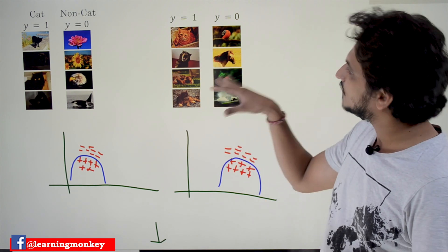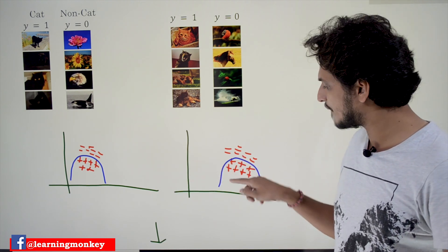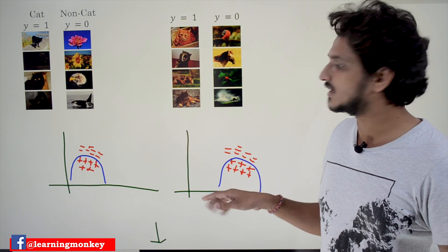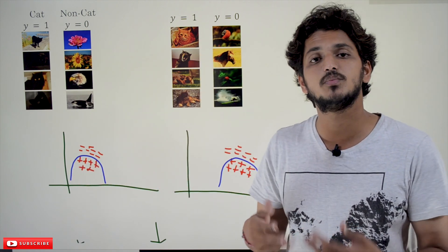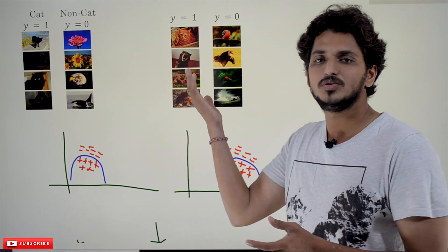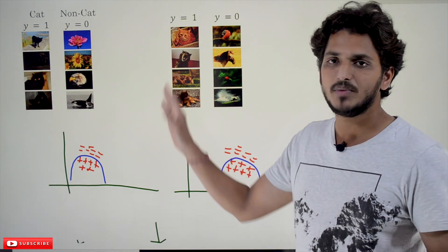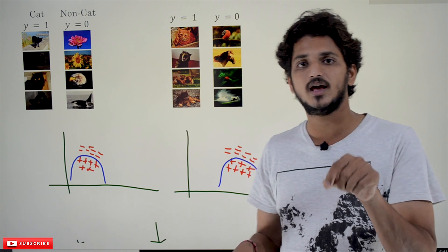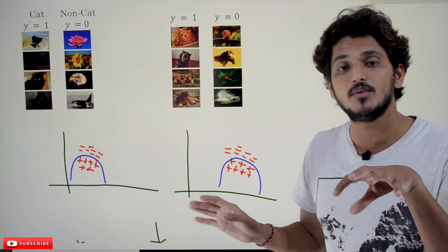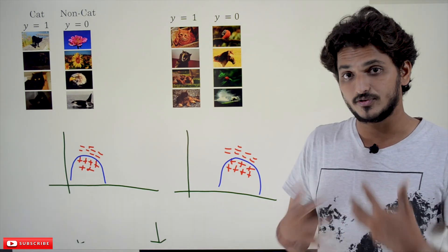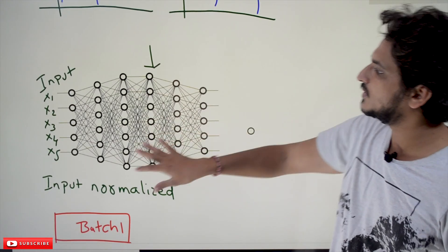Suppose in our testing data the cats are colored images. The input distribution in the testing data is different — it has shifted compared to the training data — because of the colored images considered in the cat examples. If the input distribution changes, even though the function looks similar, the training function we got during training is unable to identify the colored cat images. It is not working properly on our testing data. So if the distribution changes, we have to train the model again.